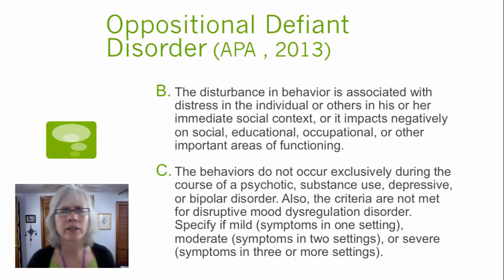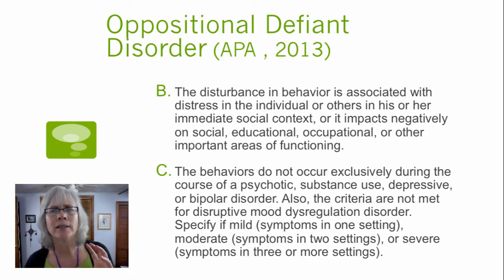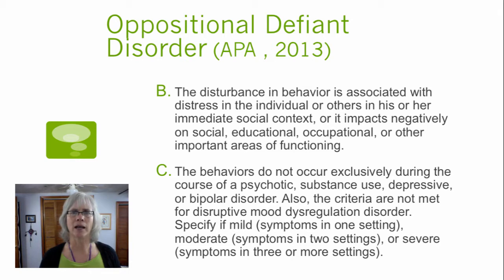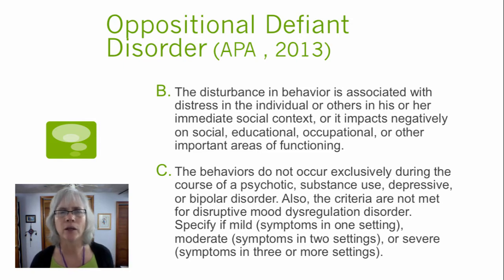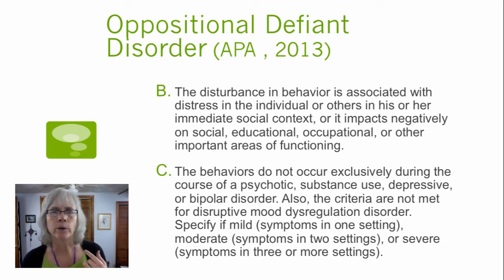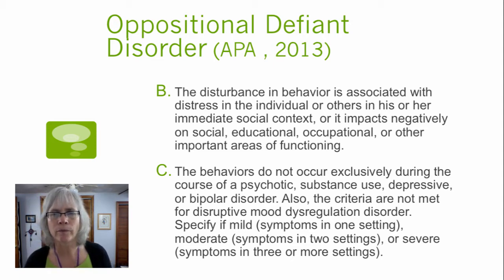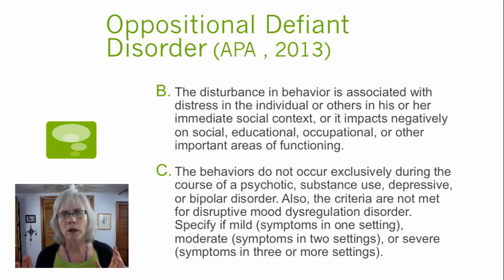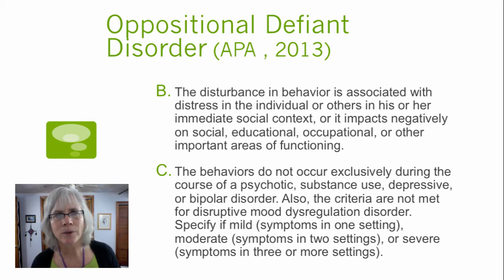As we're thinking about Oppositional Defiant Disorder, what you want to be considering is that the disturbance is associated with distress in the individual or others in that person's immediate context, and affects social, educational, occupational, and other important areas of functioning — and not exclusively during the course of a psychotic disorder, substance use, depressive, or bipolar disorder, and not just disruptive mood dysregulation disorder. So these are our rule-outs in Criterion C, some of the things we should be considering.